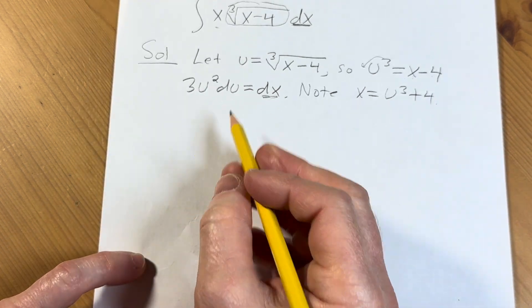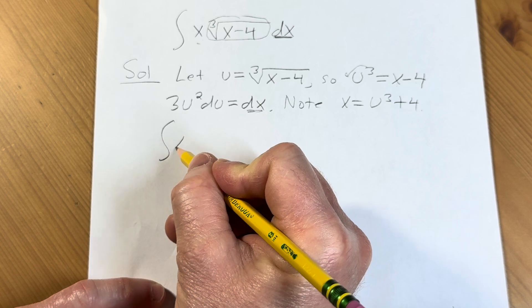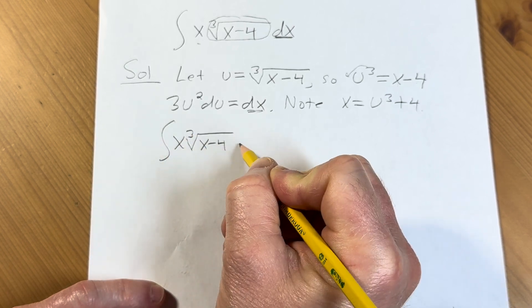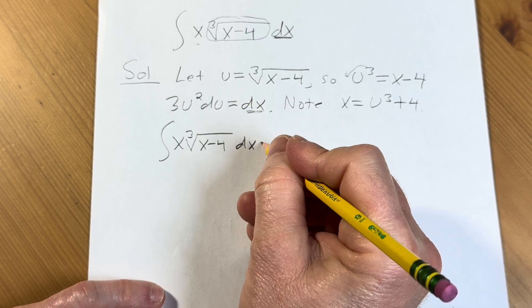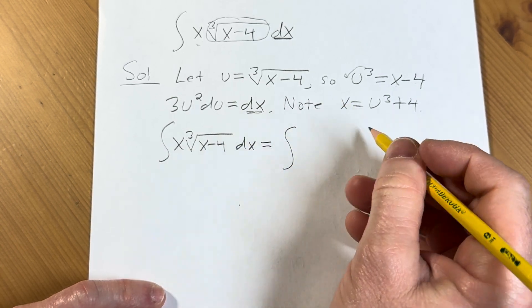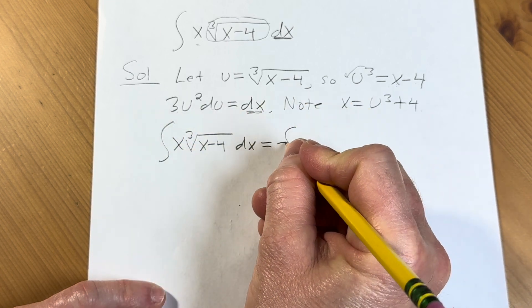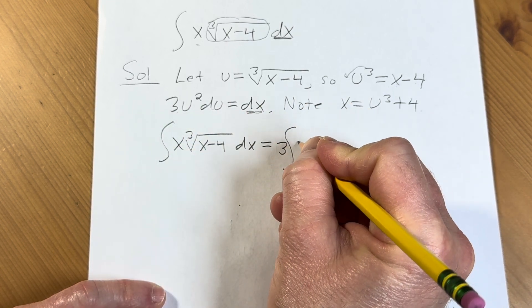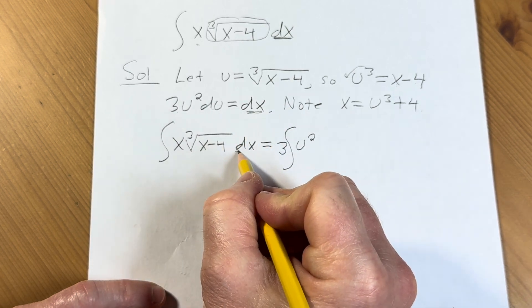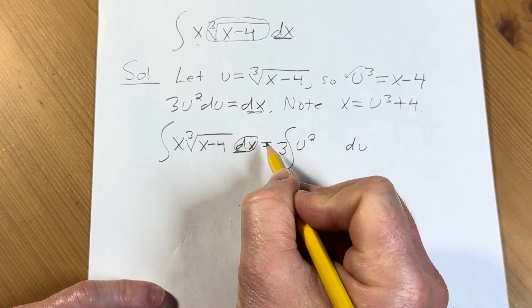So now we're in a better position. We have the indefinite integral of x times the cube root of x minus 4 with respect to x. This is equal to the indefinite integral. Our dx is 3u squared du. So I'm going to go ahead and put the 3 out here and I'll put the u squared here. So we're just taking care of the dx and then we still have our du over here. All I've done is replace the dx.